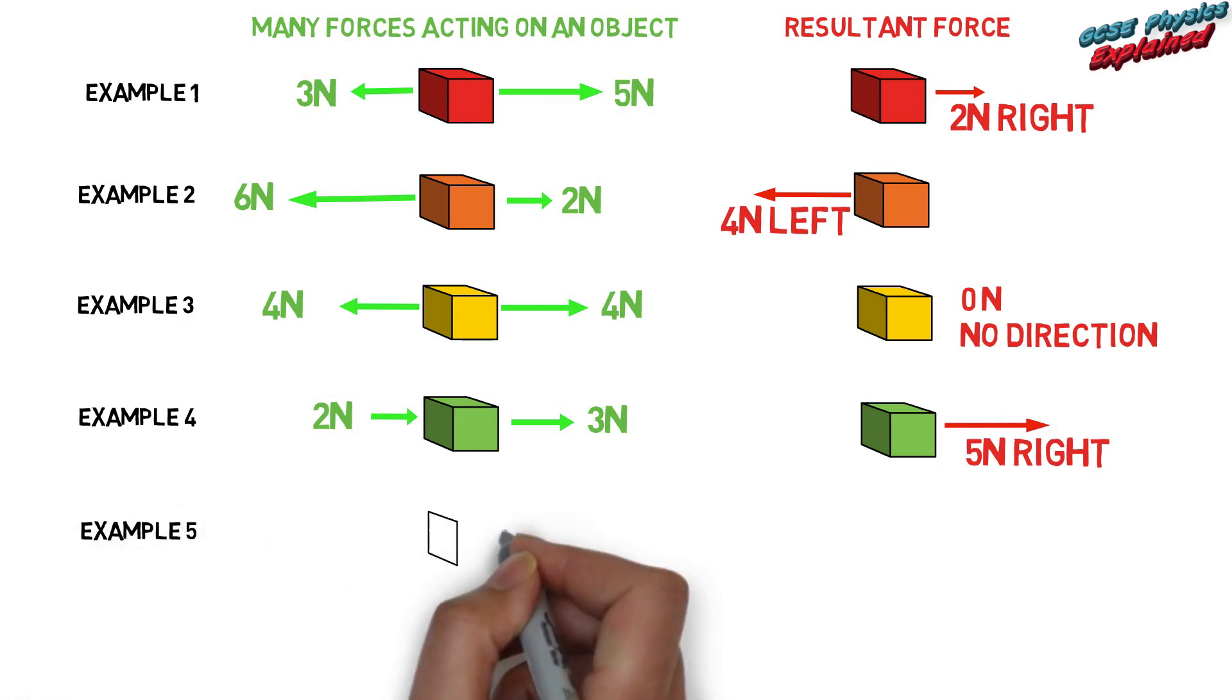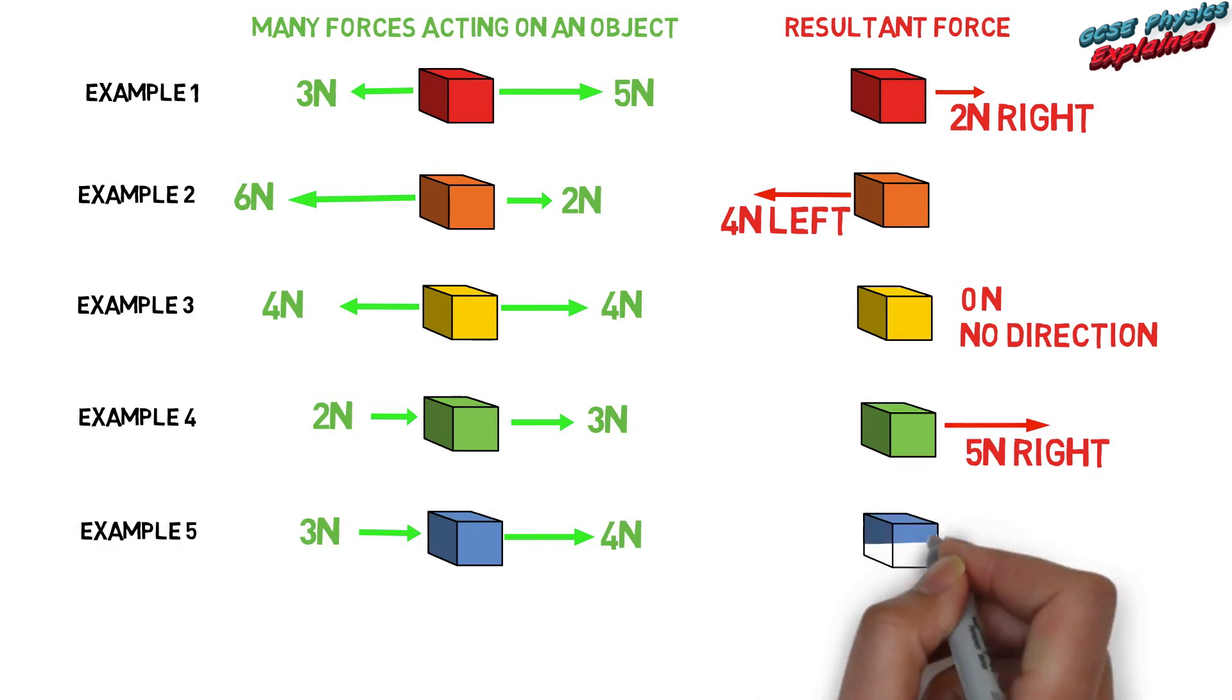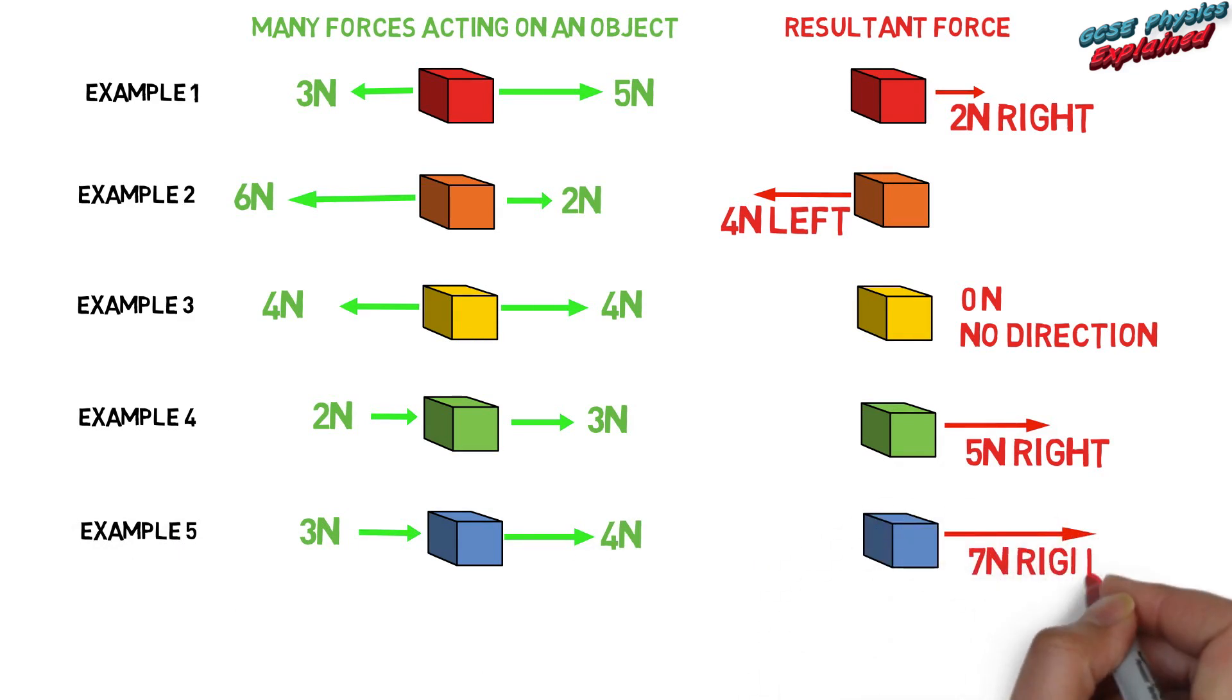Example five: Three newtons right, four newtons right. Resultant: seven newtons to the right.